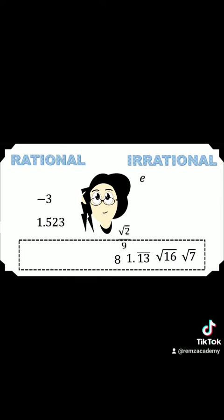Negative 3 is rational and square root of 2 over 9 is irrational. 8 is rational and also 1.13131313, though it does not stop, but the number is just repeating.